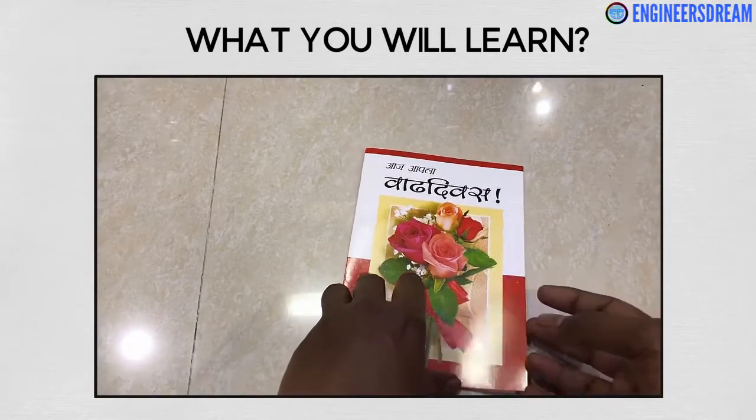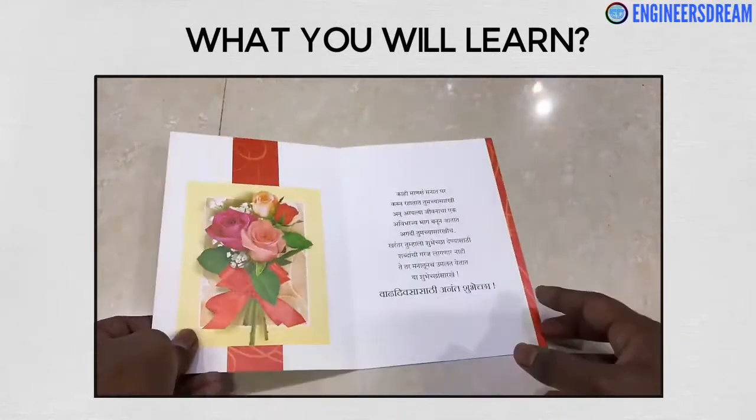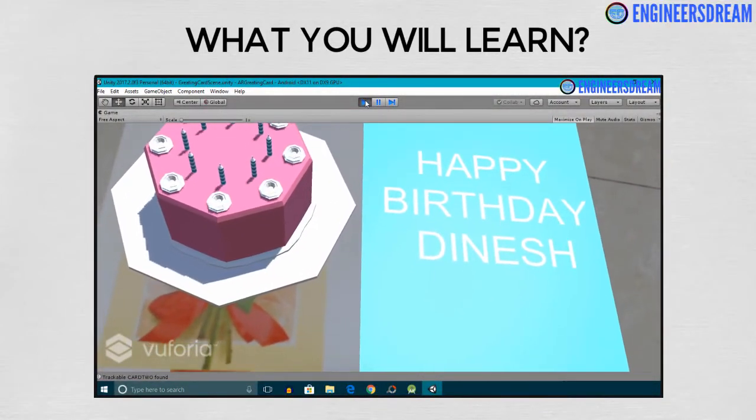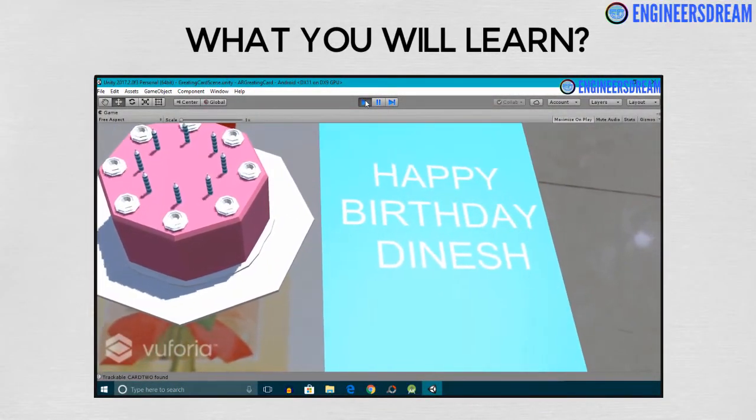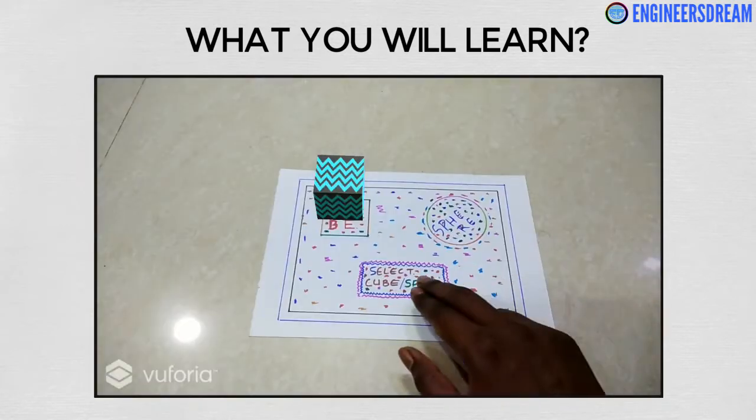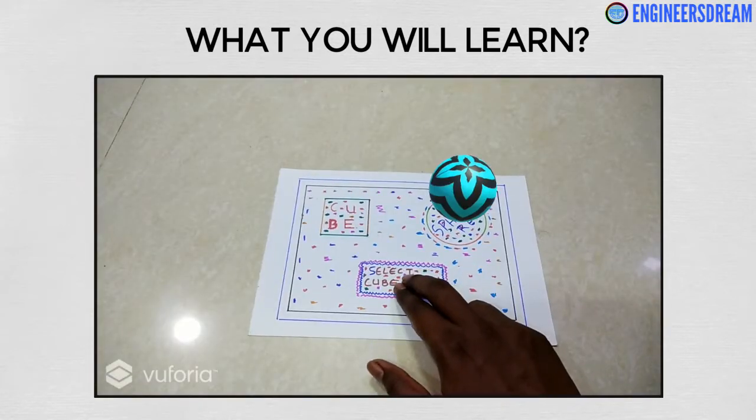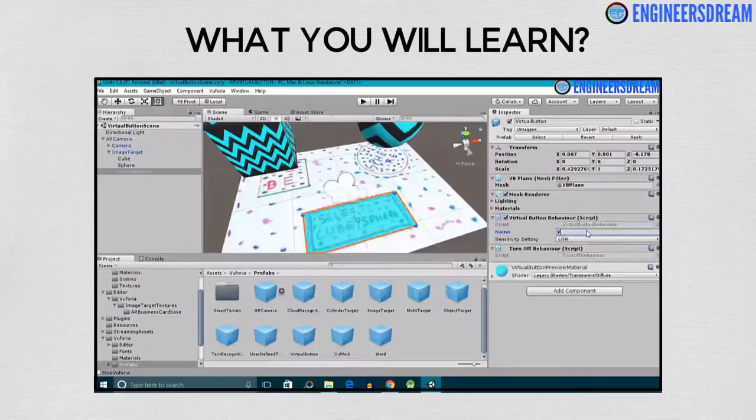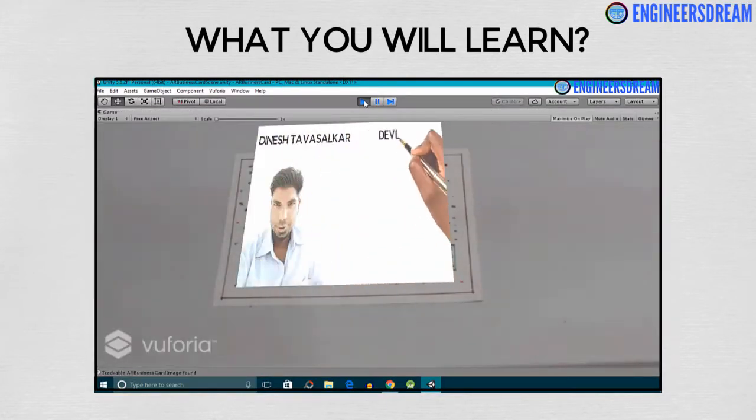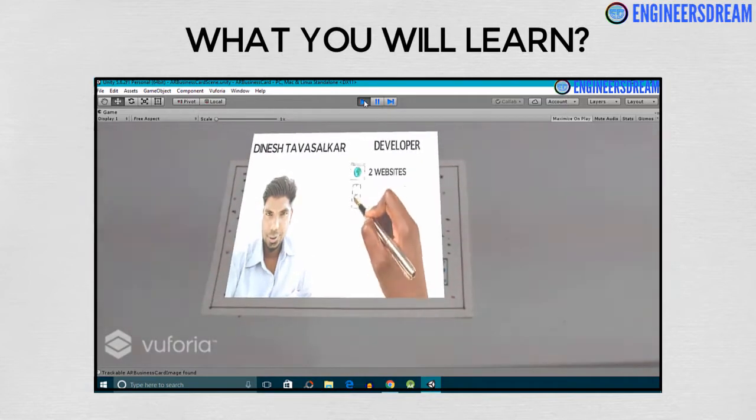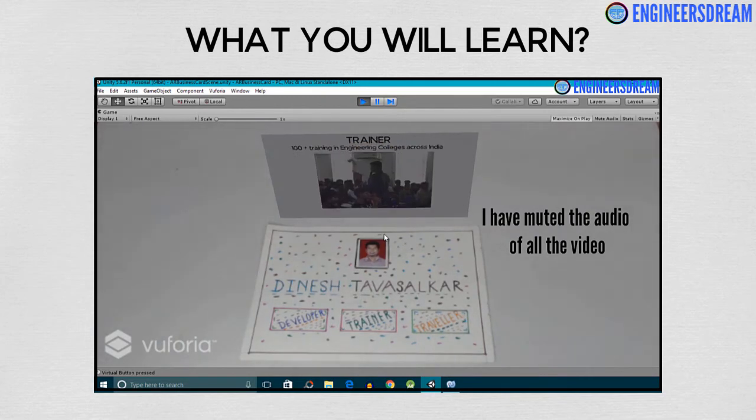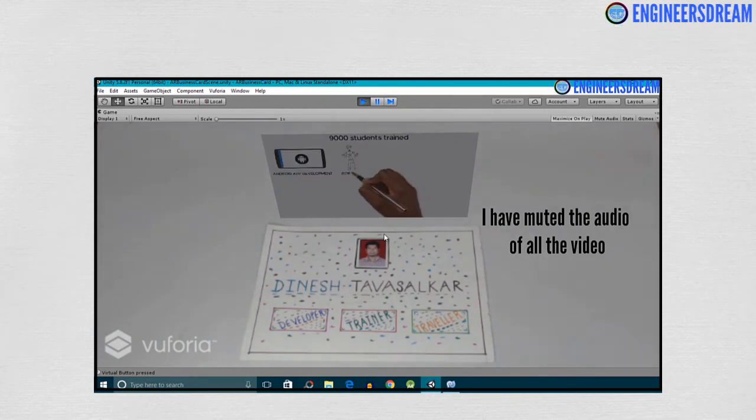The third app is called AR greeting card in which you will learn how to track multiple image targets simultaneously and play an audio file when the greeting card is opened. In the fourth app, you will learn how to interact with images using the virtual button feature in Vuforia. After this, in the fifth app, you will first play a video inside augmented reality and then when a particular virtual button is pressed, the video corresponding to that particular virtual button will start playing.